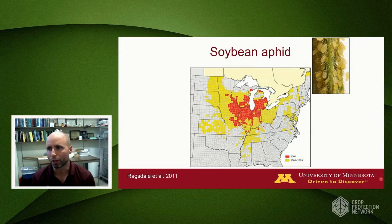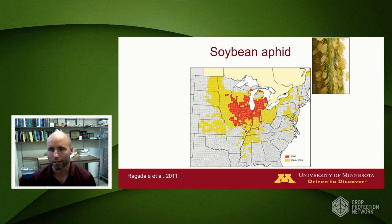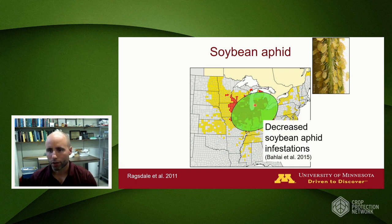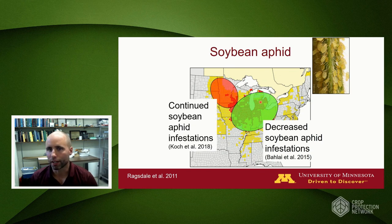A lot of us across the Midwest are pretty familiar with this pest. It's a small sap-sucking insect that can significantly reduce soybean yields if not managed, and we see that it is widespread across a lot of the soybean growing acres in the United States. Recent research has suggested that outbreaks and infestations of the soybean aphid have decreased in parts of the Midwest. However, in Minnesota, parts of the Eastern Dakotas, and Northern Iowa, we're still getting pretty consistent outbreaks.